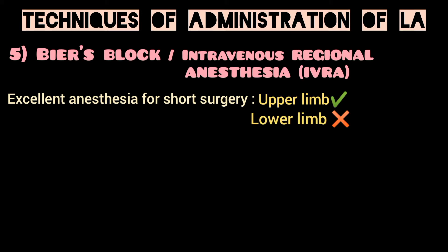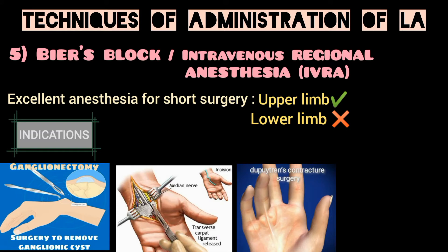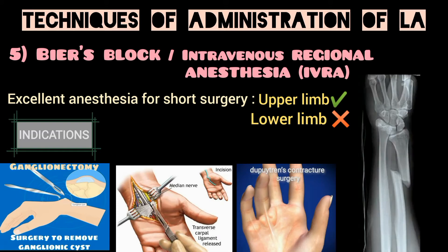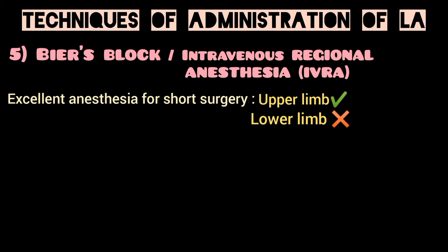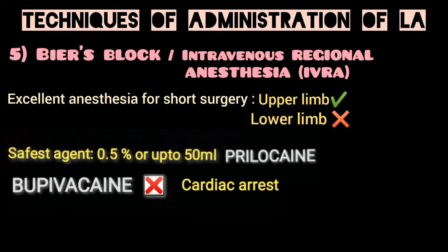Bier's block produces excellent anesthesia for short surgery, particularly for the upper limb, but it is not safe in lower limb surgery as it will require a large dose and can lead to toxic effects. It is suited for ganglionectomy, carpal tunnel release, Dupuytren's contracture surgery, or reduction of fractures. The safest agent to be used is 0.5% or up to 50 ml of prilocaine, whereas bupivacaine is absolutely contraindicated as it can cause cardiac arrest.